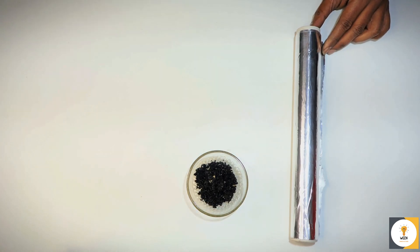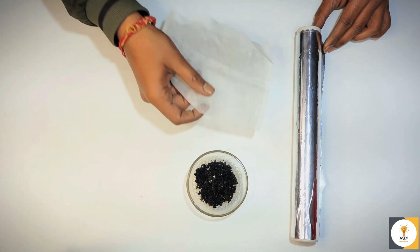Welcome back to Win Innovation. Today we will be making an aluminum air battery, a simple and fascinating project that generates electricity using aluminum, air, and some household items. Let's make it. You will need for this project aluminum foil, activated carbon, a piece of cloth.